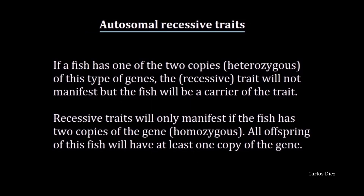Autosomal recessive traits. If a fish has one of the two copies of this type of gene, the trait will not manifest, but the fish will be a carrier of the trait. Recessive traits will only manifest if a fish has two copies of the gene. All offspring of this fish will have at least one copy of the gene.